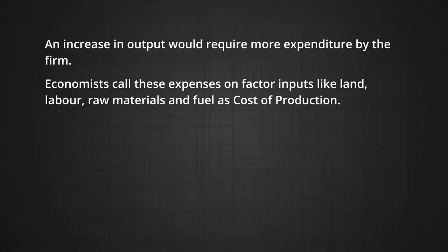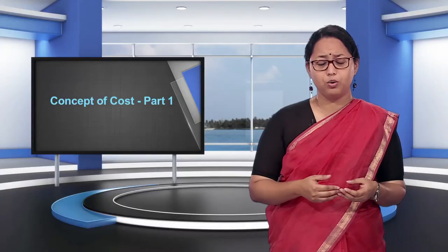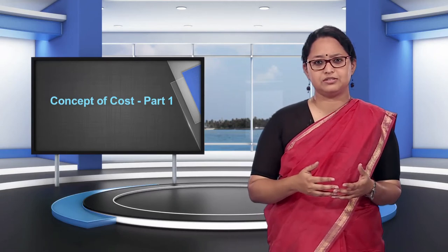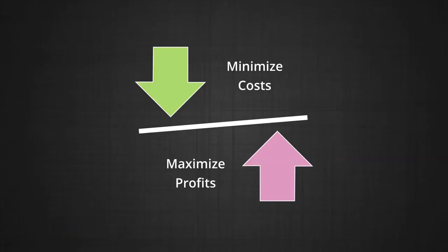An increase in output would require more expenditure by the firm. Economists call these expenses on factor inputs like land, labor, raw materials and fuel as cost of production. We know that a firm always tries to maximize its profits — this is its only objective. One way in which the firm can do this is by trying to minimize the costs of production. Economists consider this ability of the firm to maximize the profit while minimizing the cost as efficiency.